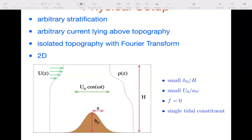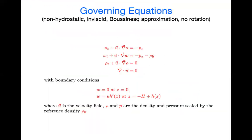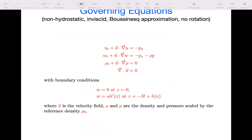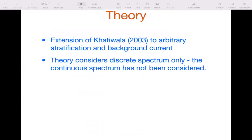Some assumptions in the theory: small topographic amplitude compared to the water depth, small tidal current (U naught is the tidal current), f equals zero in everything I'll do today except the long-ridge stuff, and a single tidal constituent. The governing equations are just non-hydrostatic, inviscid, with a Boussinesq approximation and no rotation. Note that p and rho are being scaled by the reference density rho naught.